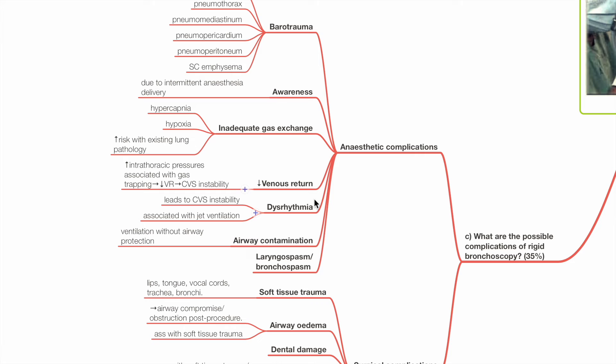Reduced venous return due to increased intrathoracic pressures associated with gas trapping. Reduced venous return leads to reduced preload and hypotension. Dysrhythmias lead to cardiovascular instability and are associated with jet ventilation.